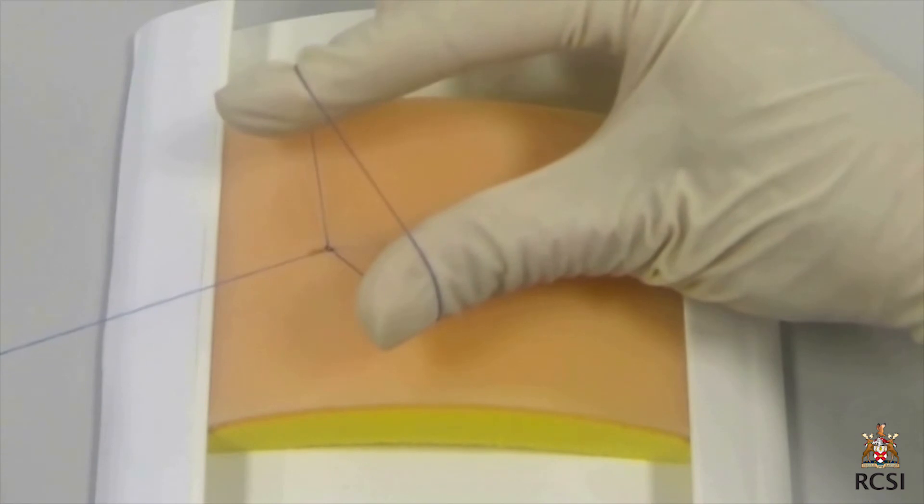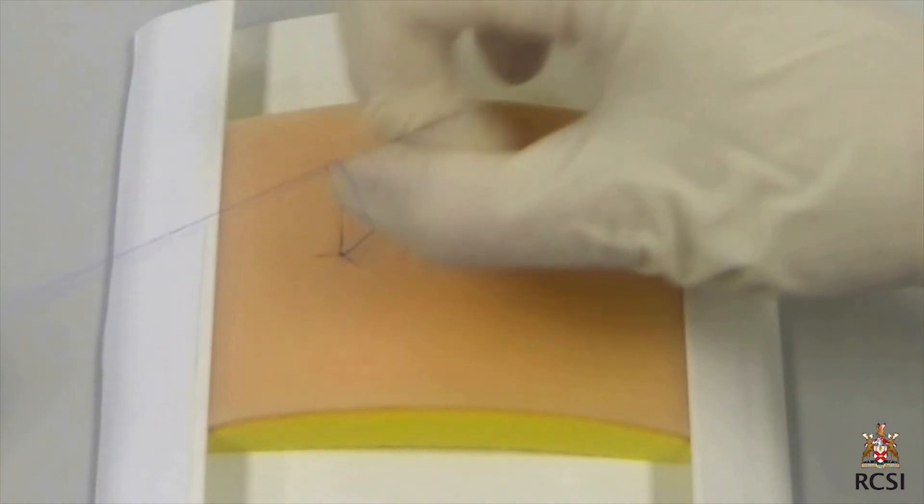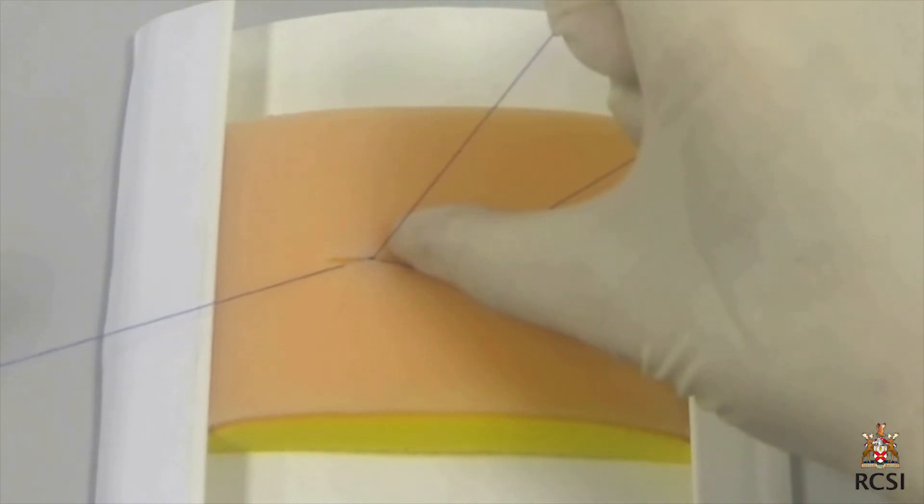Then the process is repeated, pulling another loop of suture material through the new loop while all the time holding the long end with the left hand. You will find that pulling more on the lower end of the loop with the right hand will help tighten it.